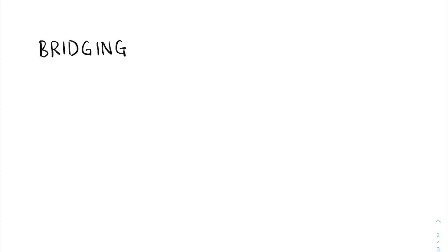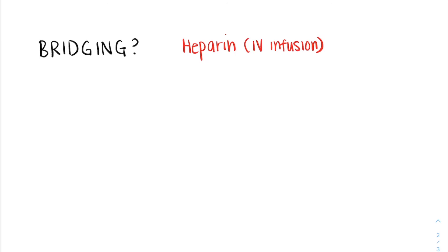Now let's talk about bridging. When we have patients who are on oral forms of anticoagulation, these often take days to wear off, and occasionally we have to stop the anticoagulation for things such as procedures in hospital. Bridging is the use of a shorter-acting form of anticoagulation while patients are not therapeutically anticoagulated on their home form of anticoagulation, and we often use something like heparin for this indication. It's an IV infusion that can be easily turned on and off and wears off in less than six hours.